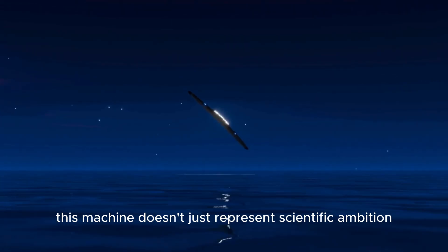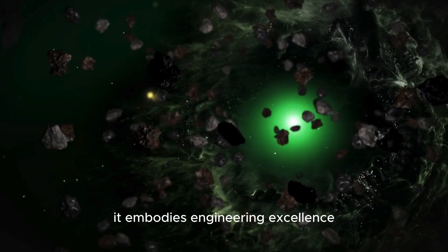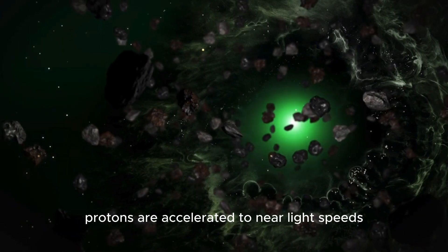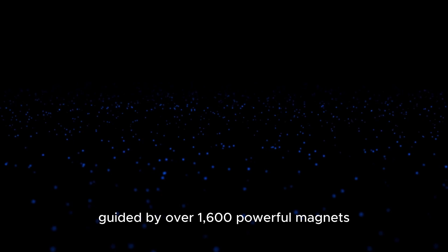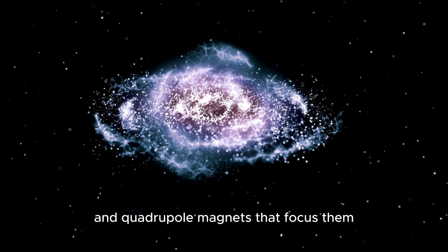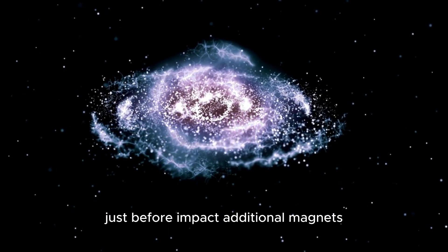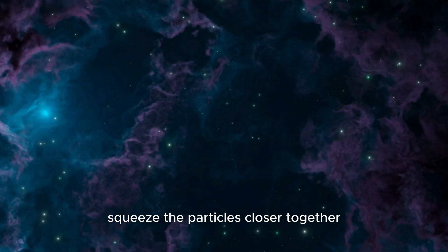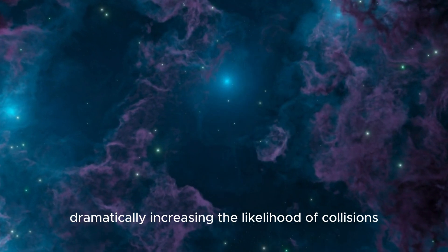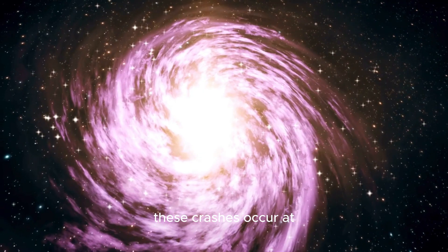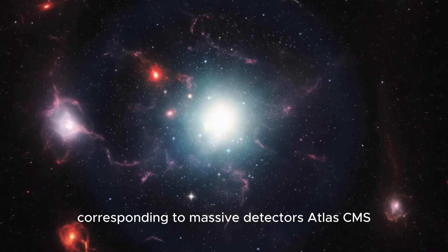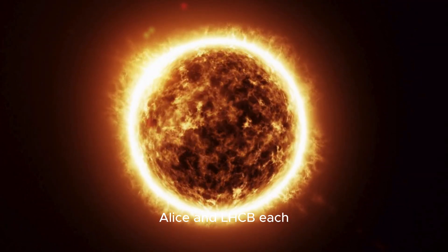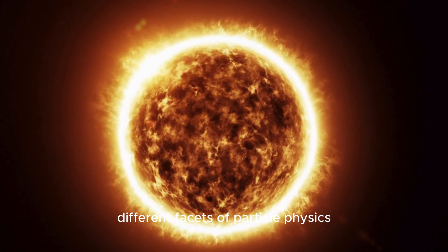This machine doesn't just represent scientific ambition. It embodies engineering excellence. Protons are accelerated to near-light speeds along two parallel beam lines in the LHC, guided by over 1,600 powerful magnets, including dipole magnets that bend the beams and quadrupole magnets that focus them. Just before impact, additional magnets squeeze the particles closer together, dramatically increasing the likelihood of collisions. These crashes occur at four strategic points along the ring, corresponding to massive detectors—ATLAS, CMS, ALICE, and LHCB—each designed to explore different facets of particle physics.